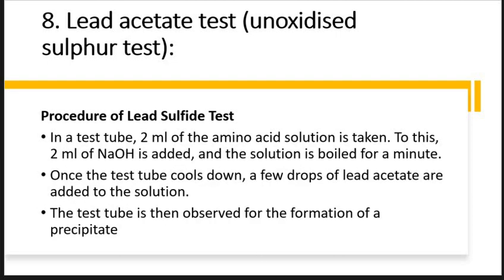What is the procedure of the lead acetate test? In a test tube, take 2 ml of the amino acid solution. To this, 2 ml of sodium hydroxide is added and the solution is boiled for one minute. Then a few drops of lead acetate are added to the solution. The test tube is then observed for the formation of a precipitate.